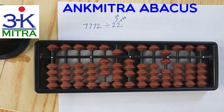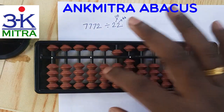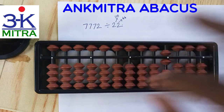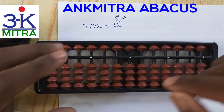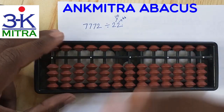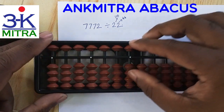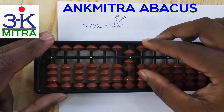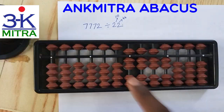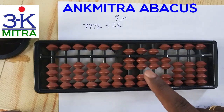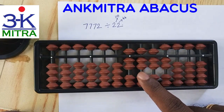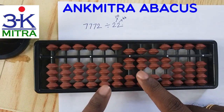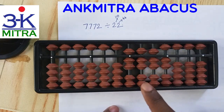Now let's look at the second method, where the student already knows the table of 22 very well and can do the division directly. It's a very easy method.